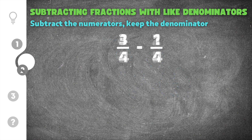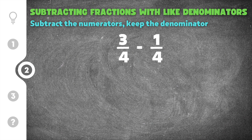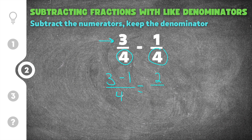Moving on to the second practice problem. This problem gives us 3 fourths minus 1 fourth. Again, we're going to take the numbers in the numerator and subtract them from each other. So we're going to do 3 minus 1, because those are our two numbers in the numerator. And we're going to write that over the denominator, which in this case is 4, so we keep that 4. When we subtract 3 minus 1, we get 2.